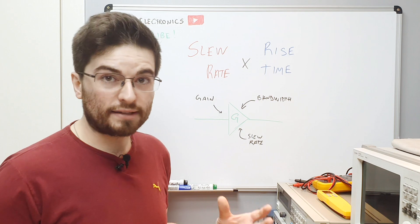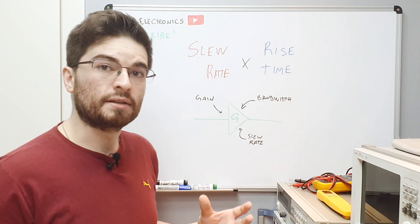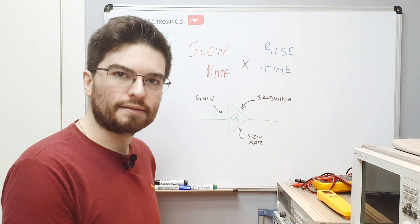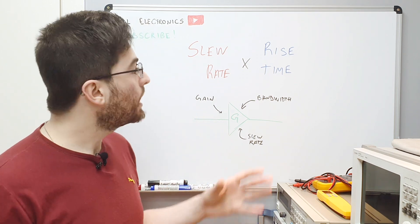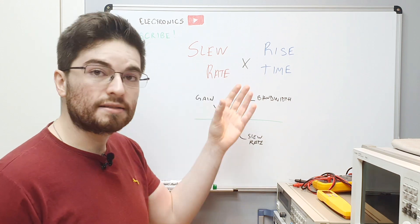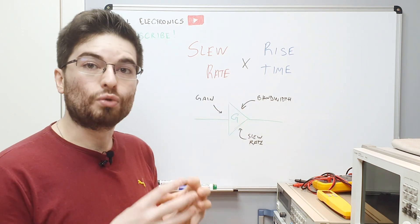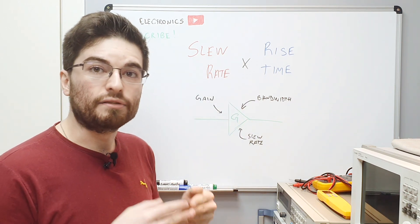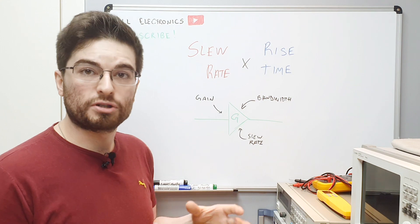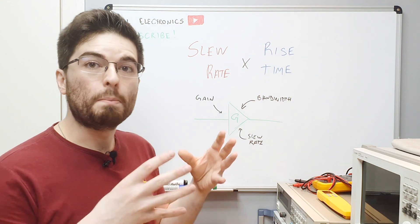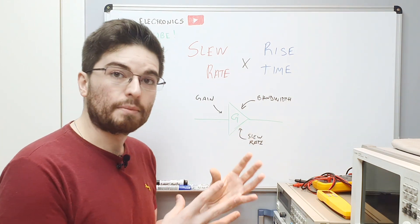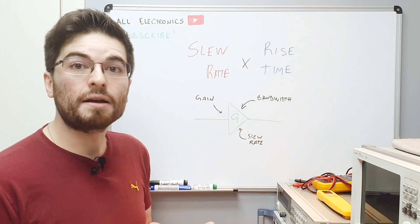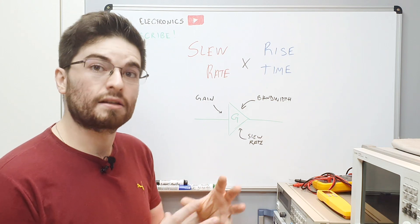When we analyze or characterize a circuit from the small signal perspective, we talk about rise time because rise time is connected and is inversely proportional to bandwidth. So rise time and bandwidth are linear characteristics of a circuit.